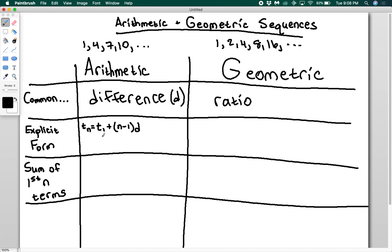My first term is 1, so I'm going to have that tn equals 1 plus n minus 1 times 3.